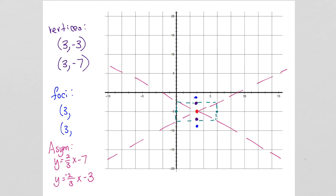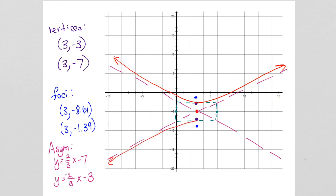We write down our foci and now we can graph the hyperbola using our asymptotes as a guide. This is a very wide hyperbola.